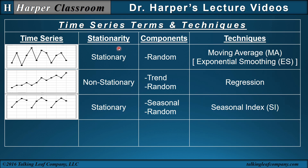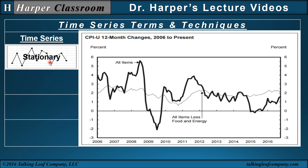Now that we've seen stationarity and components, let's look at some examples with these three time series. First is a stationary time series — the Consumer Price Index from 2006 to 2016. The dark line is all items, and we see it looks like there might be a slight negative trend, or from 2011 on it's fairly stationary. But if you take out food and energy, the lighter line, it's relatively stationary.